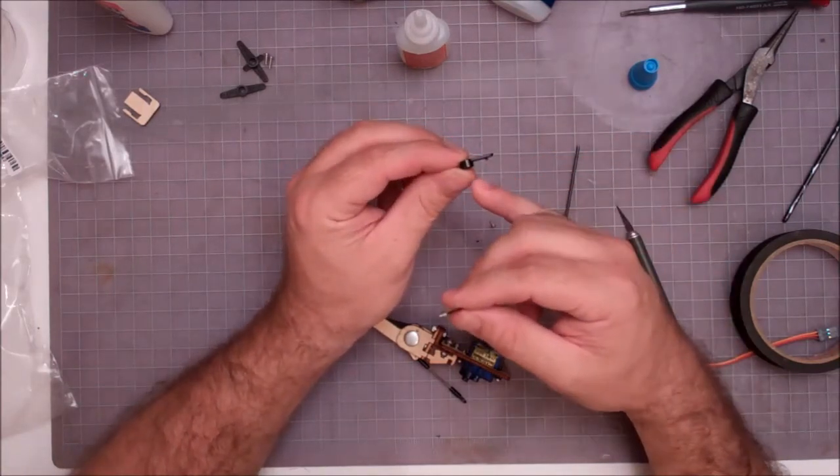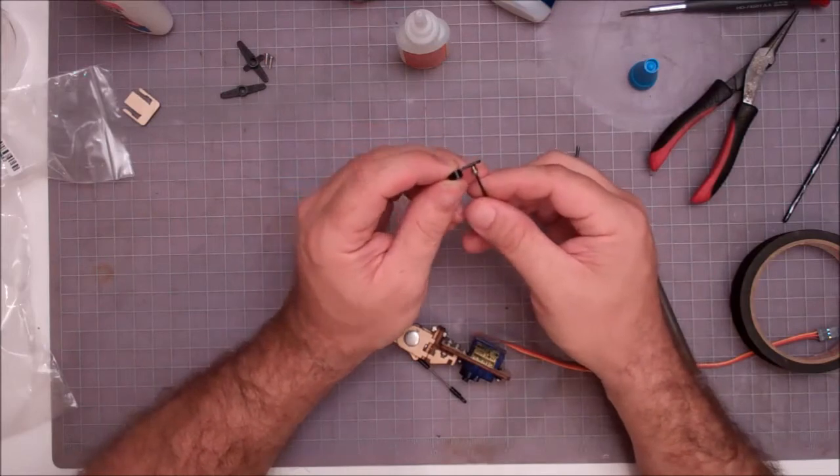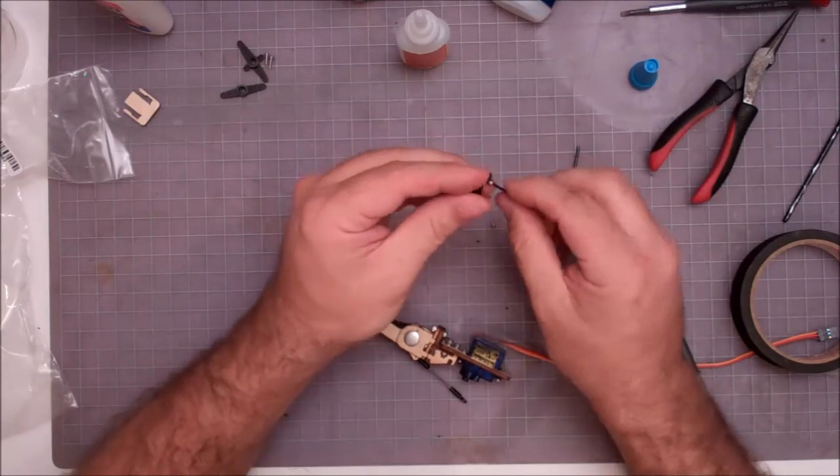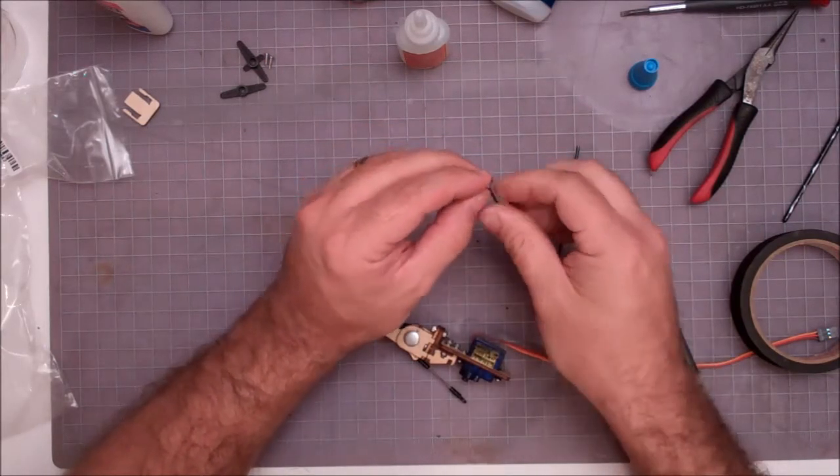So the servo arm has a top and a bottom. You want to come in from the bottom side of the servo arm and that's because the way the linkage works on the finger, you want that on the bottom.